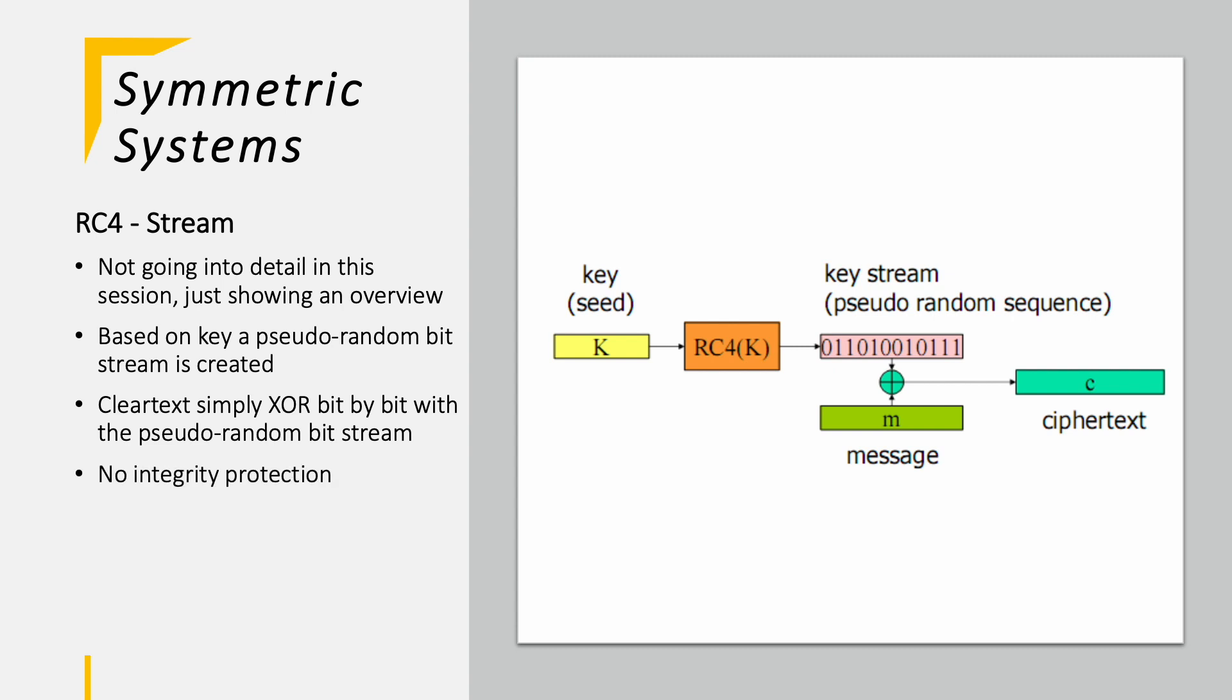RC4 has no integrity protection so if a bit is flipped accidentally or purposely it cannot be detected by the receiver. The algorithm was hacked the first time in 2001 so already 21 years ago. Finally, IETF as a central authority forbid the use of RC4 in 2015. However, you will still find systems actually using this algorithm or accepting RC4 when ciphers are being selected between sender and receiver.